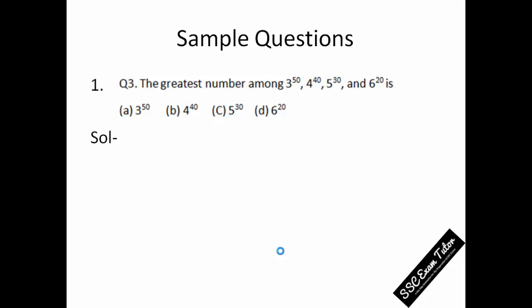We need to compare these four numbers having very big powers: 3 to the power 50, 4 to the power 40, 5 to the power 30, and 6 to the power 20. What we do is find the HCF—that is, highest common factor—of these powers. In this question we have powers 50, 40, 30, and 20, so find the HCF of these powers and you will get 10 as your answer.